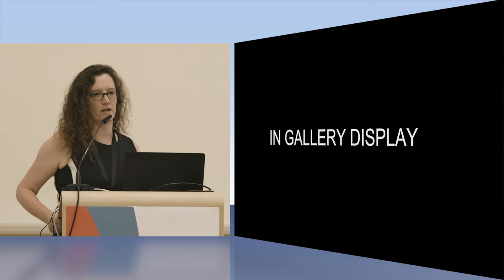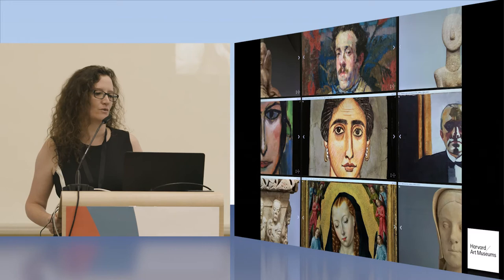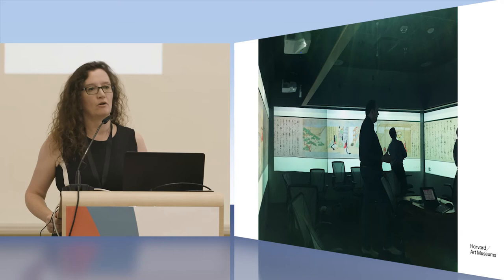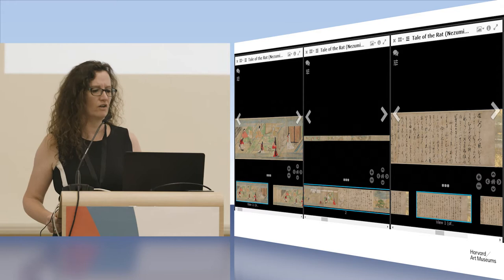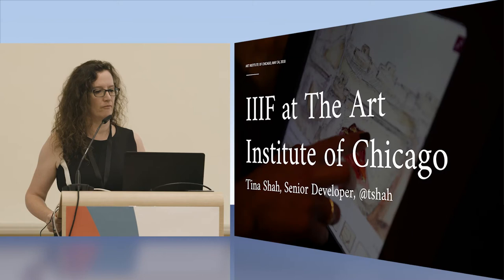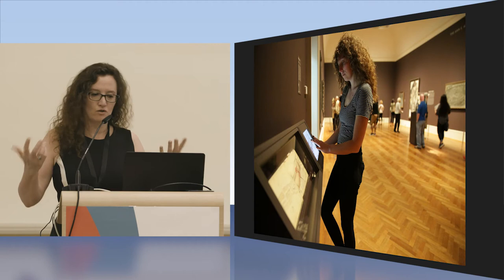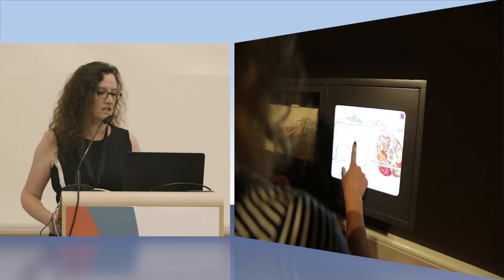Gallery displays are a big deal for museums as well. The Harvard Art Museums have made fantastic use of IIIF in-gallery displays — this is a ginormous wall, live-sized, where the same images scale up. One of their scrolls is a work of art that is very long and skinny, and IIIF allows them to display it in a much better way. The Art Institute of Chicago has also done very nice work embedding a IIIF viewer directly in the gallery, which is particularly helpful for objects that are fragile or where you can see only one page at a time.